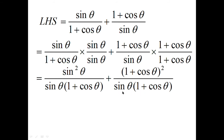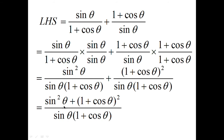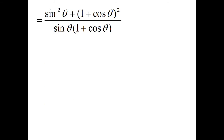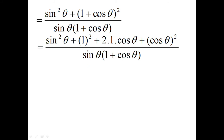Since both fractions now have the same denominator, we write the numerator as sine squared theta plus (1 plus cos theta) whole squared, all divided by sine theta times (1 plus cos theta). The term (1 plus cos theta) whole squared takes the form (a + b) whole squared, which expands as a squared plus 2ab plus b squared. Here, 1 is taken as a and cos theta as b, so it expands as 1 squared plus 2 times 1 times cos theta plus cos squared theta. The sine squared theta term is copied down, and the denominator remains the same.